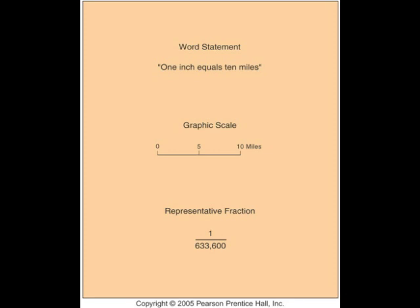A word statement of a map scale compares X units on the map to Y units on the Earth, often abbreviated X unit to Y units. For example, the expression 1 inch to 10 miles means that 1 inch on the map represents 10 miles on the Earth.